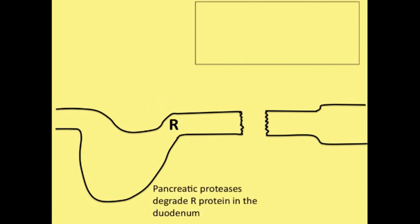Here we have pancreatic proteases. This is how R protein is degraded, and it's degraded in the duodenum.